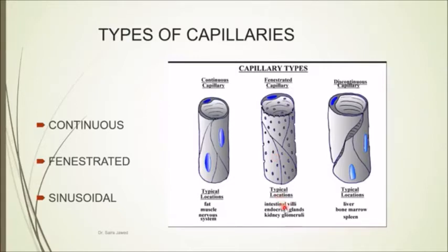Fenestrated capillaries are present in the intestines, in the endocrine glands, and also in the glomeruli of the kidney. Then there are sinusoidal capillaries, which are large dilated capillaries. They are also known as discontinuous capillaries.